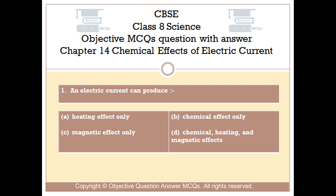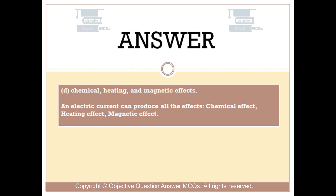The right answer is Option D — chemical, heating, and magnetic effects. An electric current can produce all the effects: chemical effect, heating effect, and magnetic effect.